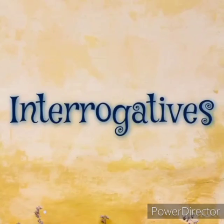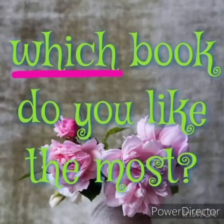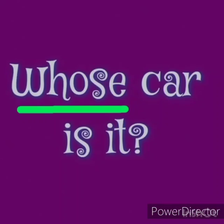The last category of determiners is interrogatives. 'Which', 'what', and 'whose' are words that determine a group or a specific thing by inquiring about them. 'Which' determines a specific thing — for example, 'Which book do you like the most?' 'What' determines a general thing — for example, 'What books do you like to read?' 'Whose' inquires about ownership — for example, 'Whose car is it?'